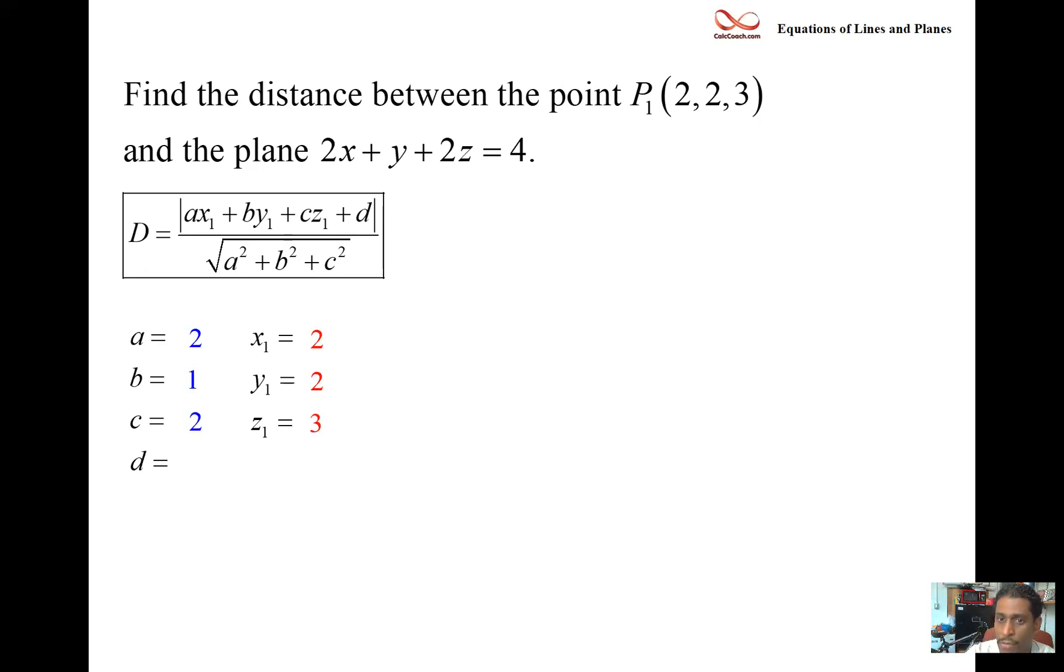So we should do that for this particular plane and move over the +4 and subtract it over to the other side. And so shift this guy over here to the other side, and actually then that would make d equal to -4.